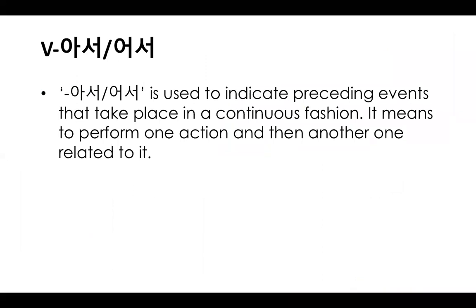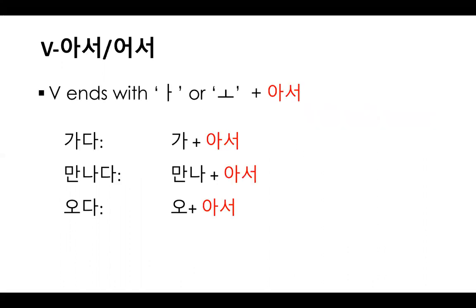동사 verb 아서 or 어서 is used to indicate preceding events that take place in a continuous fashion. It means to perform one action and then another one related to it. So let's look at the conjugation rules.